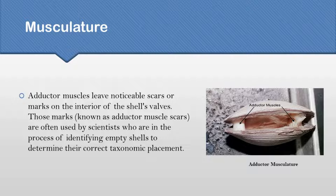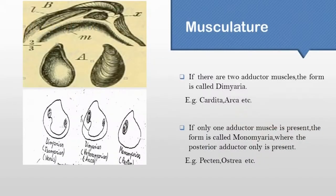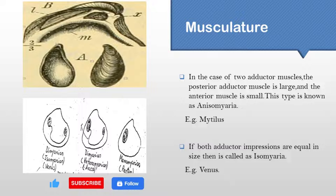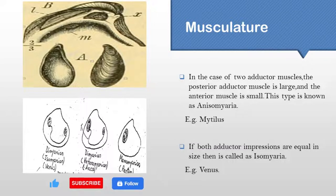We can find one anterior and one posterior adductor muscle. These muscles help Pelecypoda to close the valves in necessary situations. According to the number of adductor muscles, there are mainly two forms of bivalves. All freshwater bivalves generally have two adductor muscles and are known as dimyaria. If the two muscles do not differ in size, they are called isomyarian.